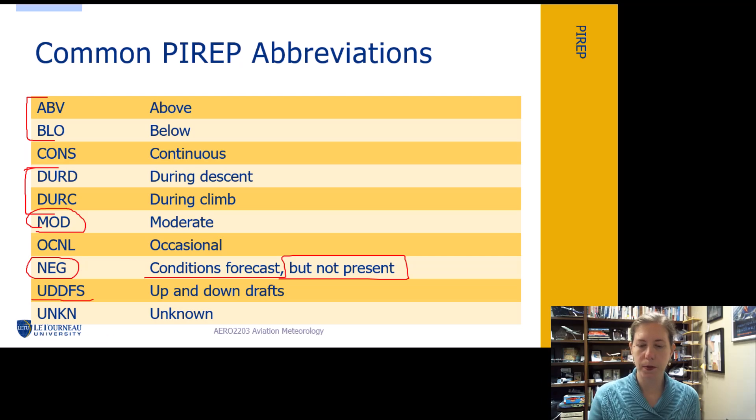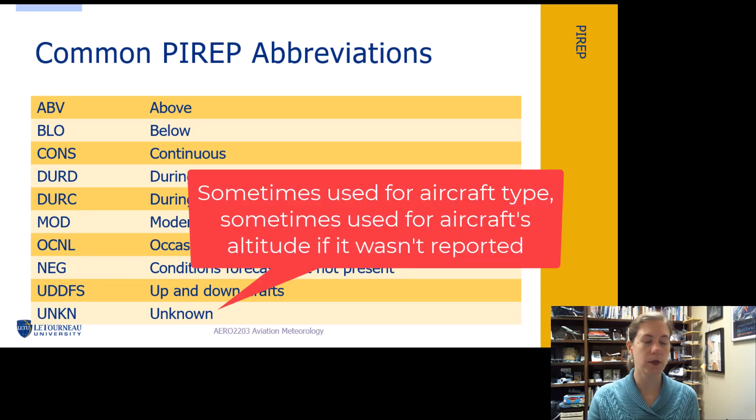Another one is updrafts and downdrafts, UDDFS, not maybe the most obvious abbreviation there. And unknown, UNKN. Sometimes we see this for the aircraft type. Could be not reported, so it's unknown. Could be that the flight is at an altitude we don't know, and then it would be reported as unknown.